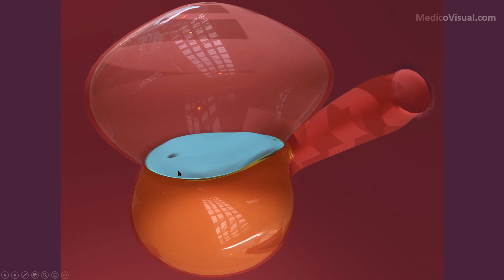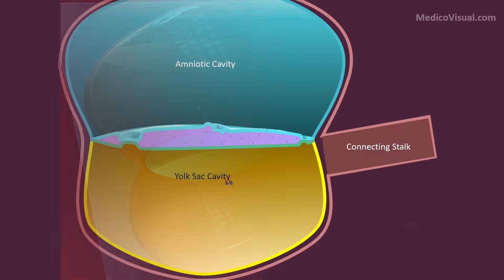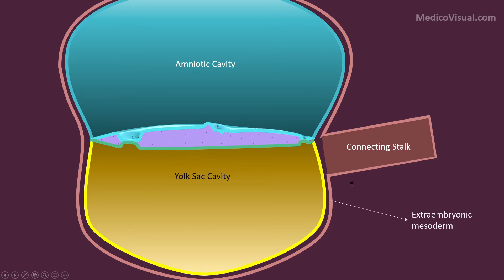Here is the embryo at about day 16. If we cut a section from the middle, remove the front part, and view it from the front, this will be the picture you see. You can see the amniotic cavity, the yolk sac cavity, the connecting stalk, and the extra-embryonic mesoderm. The embryo proper consists of three germ layers — it is the trilaminar embryo — with the outer ectodermal layer, the embryonic endoderm, and the middle layer called mesoderm.